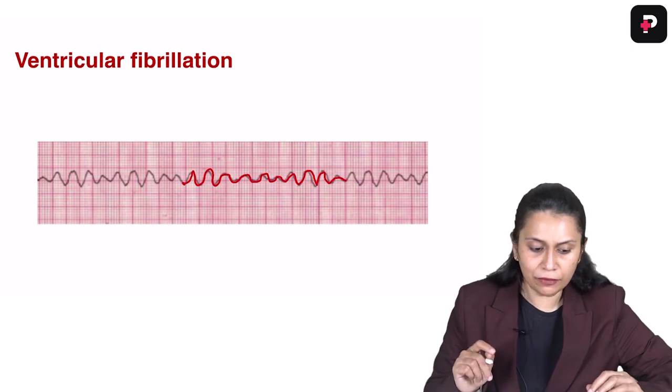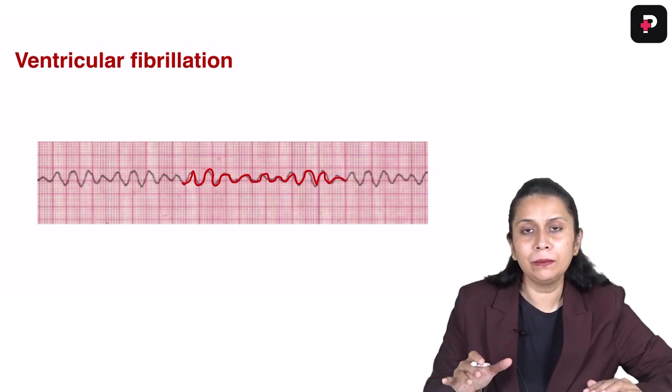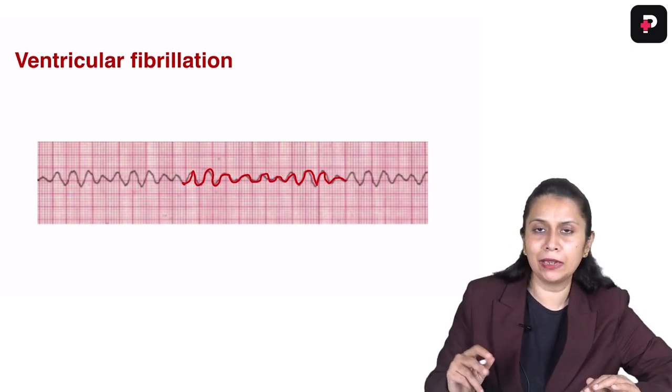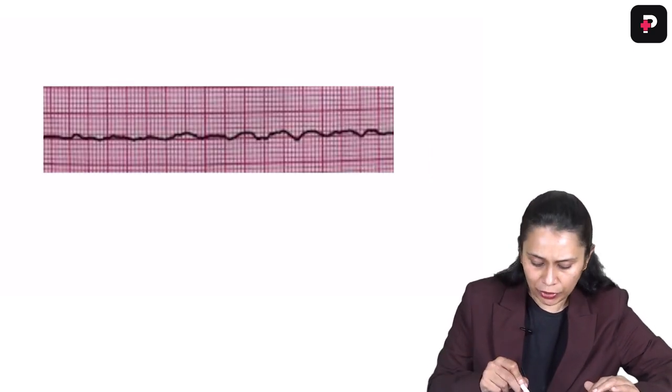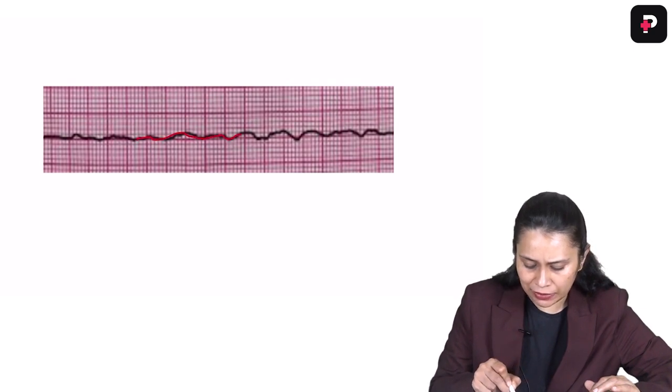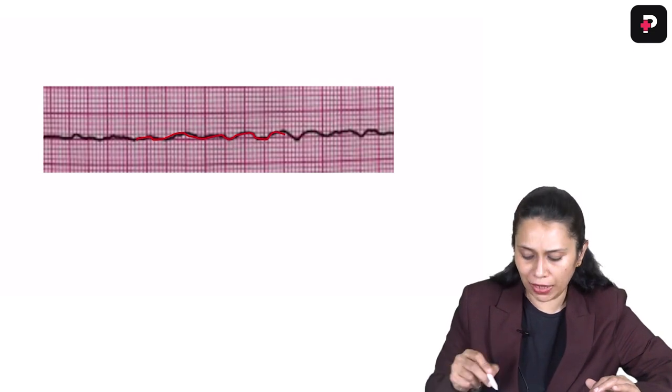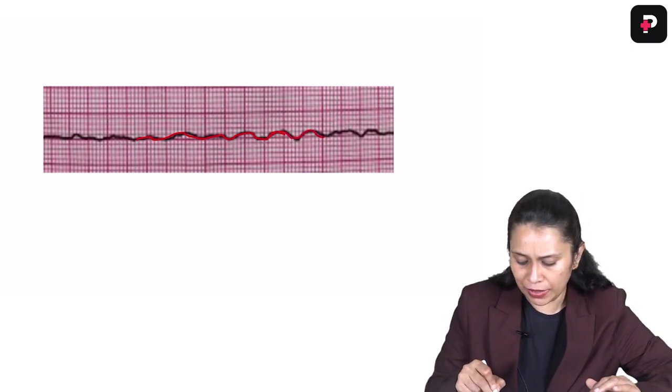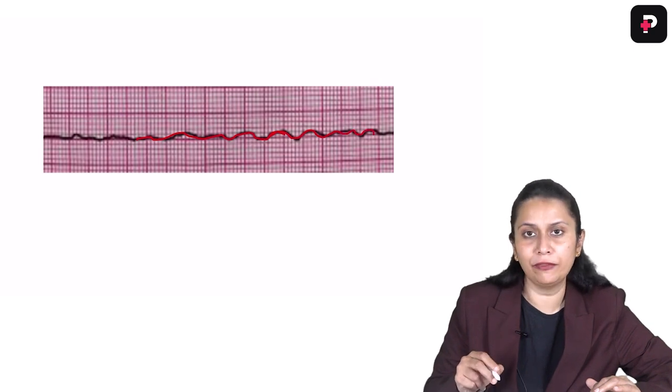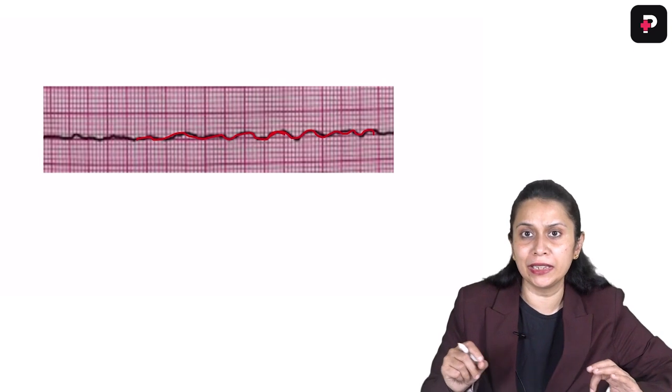This ventricular fibrillation can be coarse ventricular fibrillation, which is in my image, or it can be very fine ventricular fibrillation. You can see in the ECG strip, we can barely recognize this—it looks like a straight line or flat line, but it is not flat line. There is a fibrillating waveform or quivering waveform around the axis in the ECG strip.